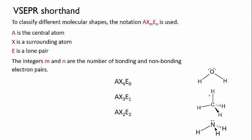Methane with four bonds around the central atom and no lone pairs is denoted AX4E0. Ammonia with three bonds and one lone pair is denoted AX3E1.